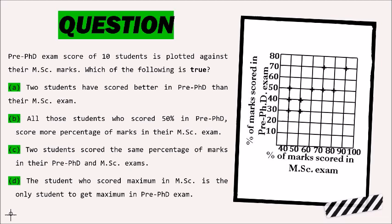Option A: Two students have scored better in pre-PhD than their MSc exam. Option B: All those students who scored 50% in pre-PhD score more percentage of marks in their MSc exam.